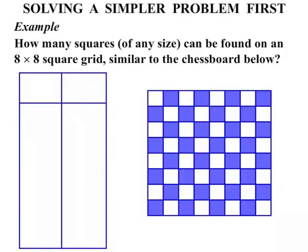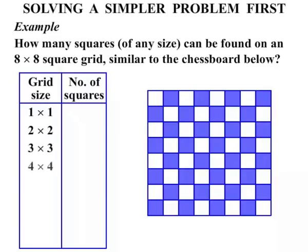So what we are going to do is solve a simpler problem first. We are going to compare a grid size to the number of squares we get. We are going to start with a very simple grid: one by one, then two by two, then three by three. And we are working our way up to eventually get to the 8×8 grid, which is this question.